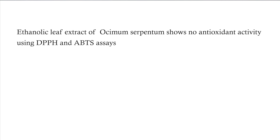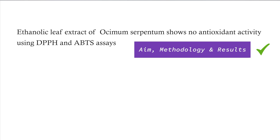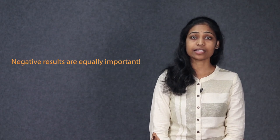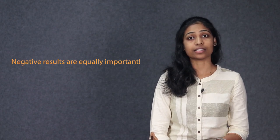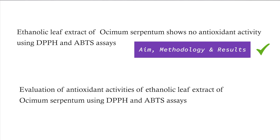Many times, it is not possible to mention the result in the title. For example, Ethanolic Leaf Extract of Osimum Serpentum shows no antioxidant activity in DPPH and ABTS assays. Does not sound interesting and attractive even though it is scientifically relevant. This is because of the negative results obtained. But papers with negative results are equally important as the ones with positive results. So, in such cases, you may use the format such as Evaluation of Antioxidant Activities of Ethanolic Leaf Extract of Osimum Serpentum using DPPH and ABTS assays.